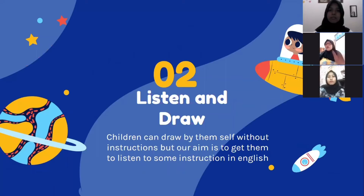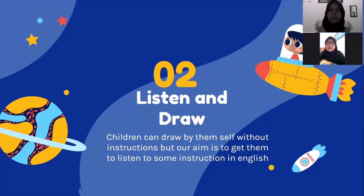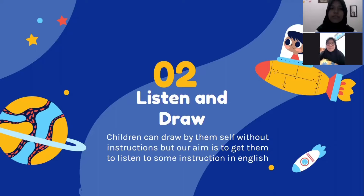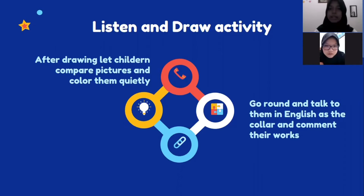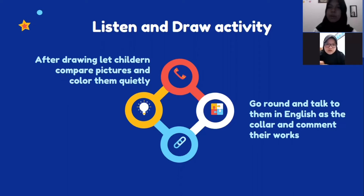For sub-topic two, we will present by Mbak Fina. The floor is yours. In listen and draw, children can draw by themselves without instructions, but our aim is to get them to listen to some instructions in English. After drawing, let children compare pictures and color them quietly. Go around and talk to them in English as they color and comment on their work.